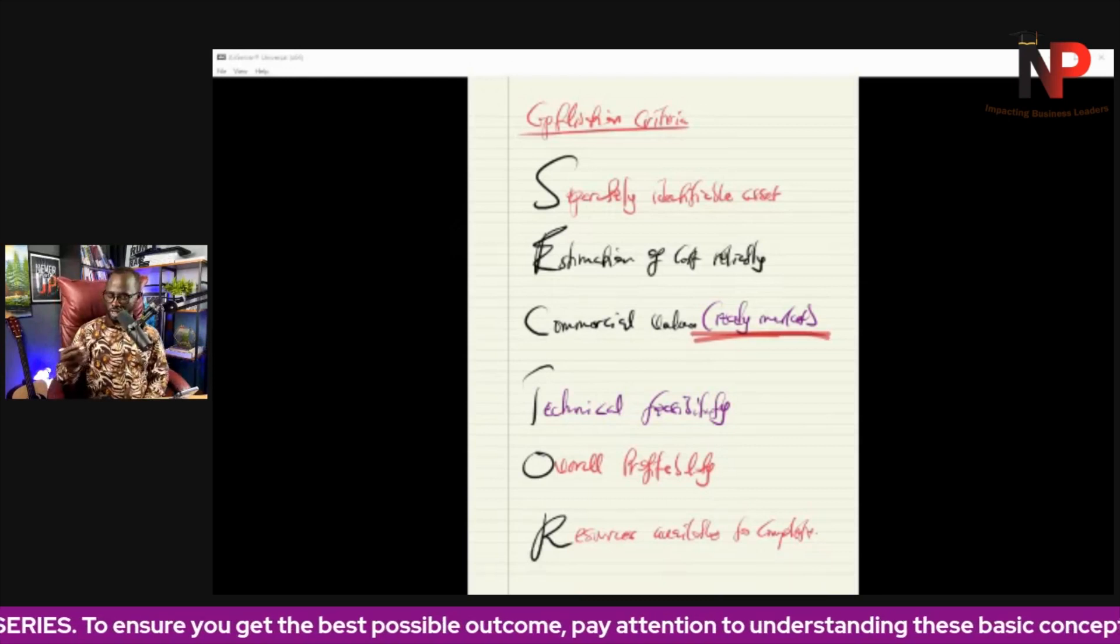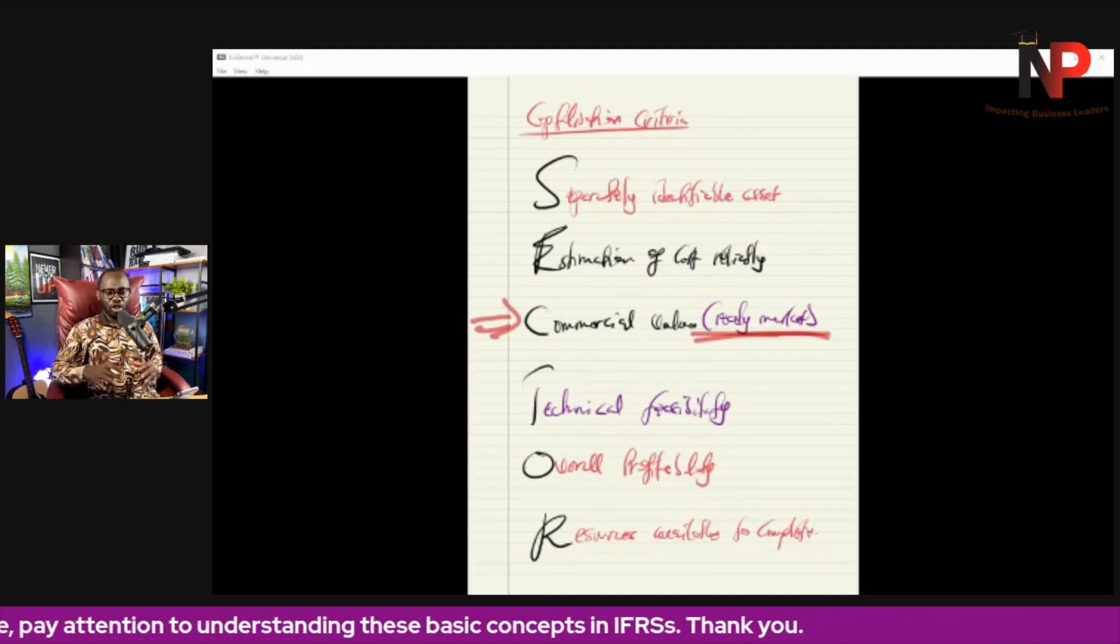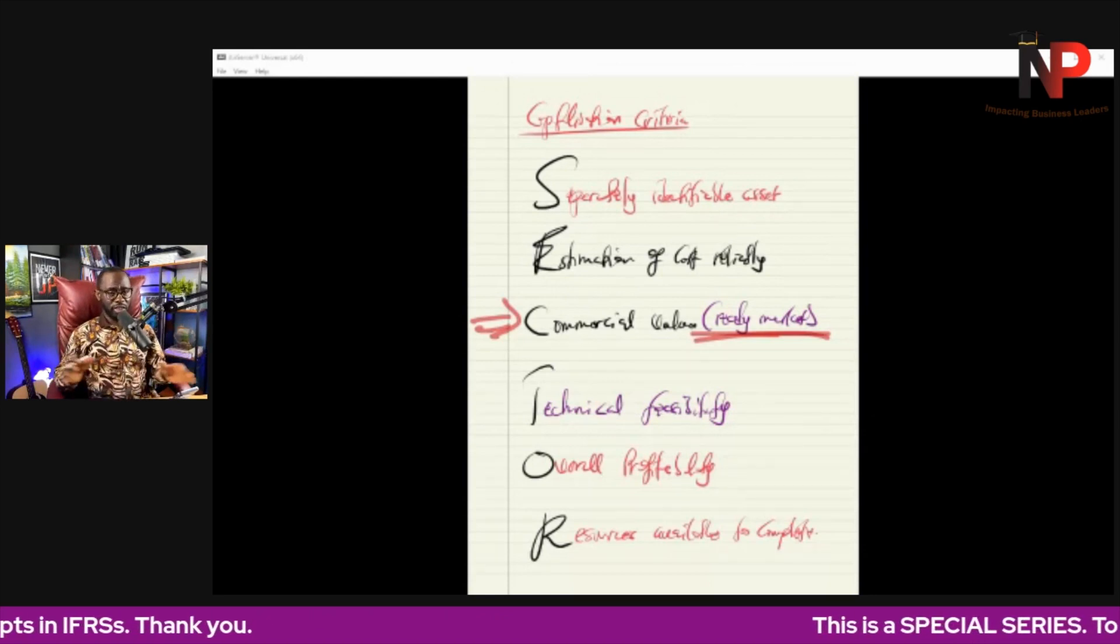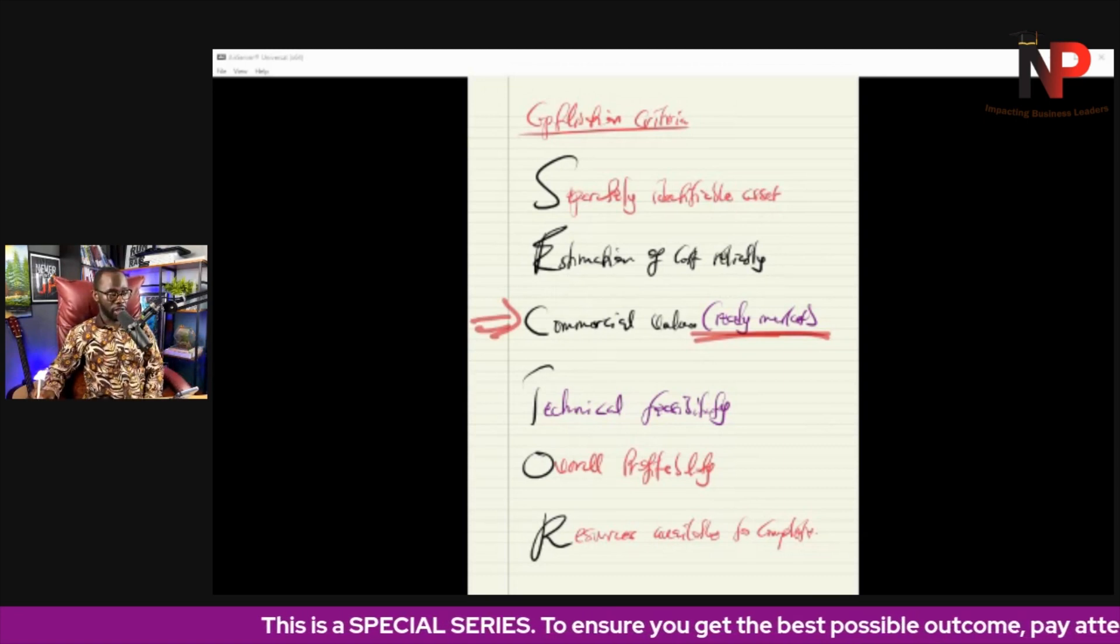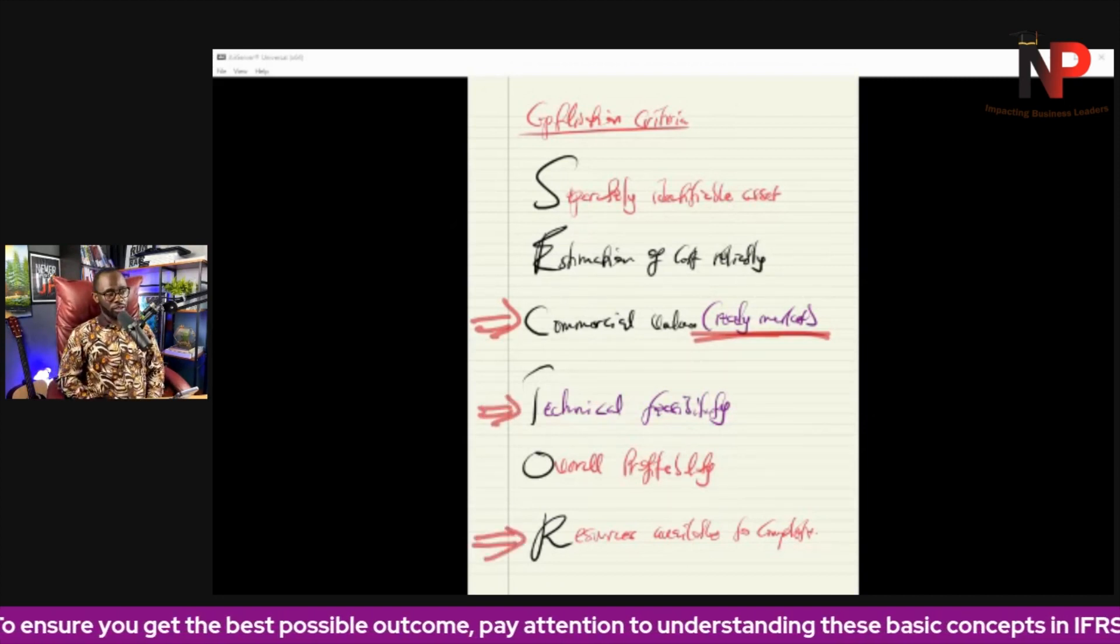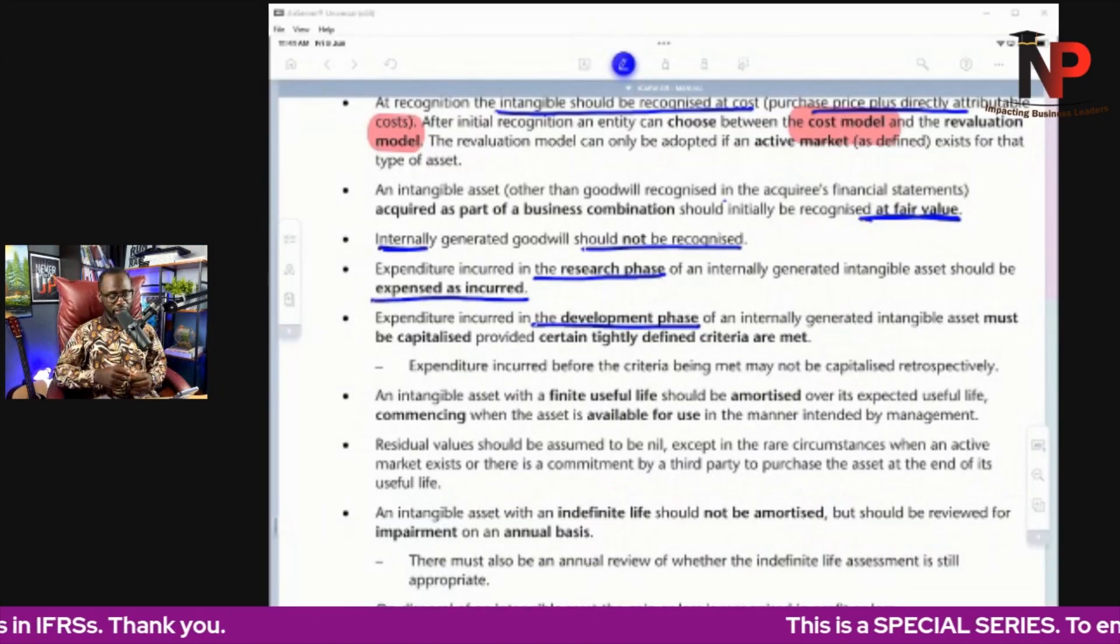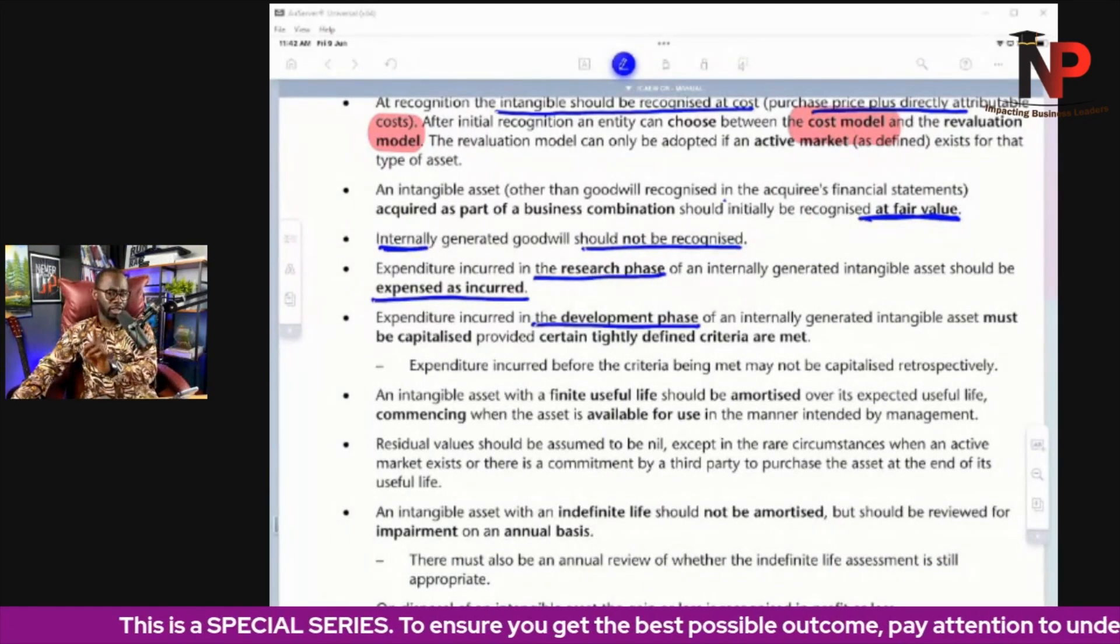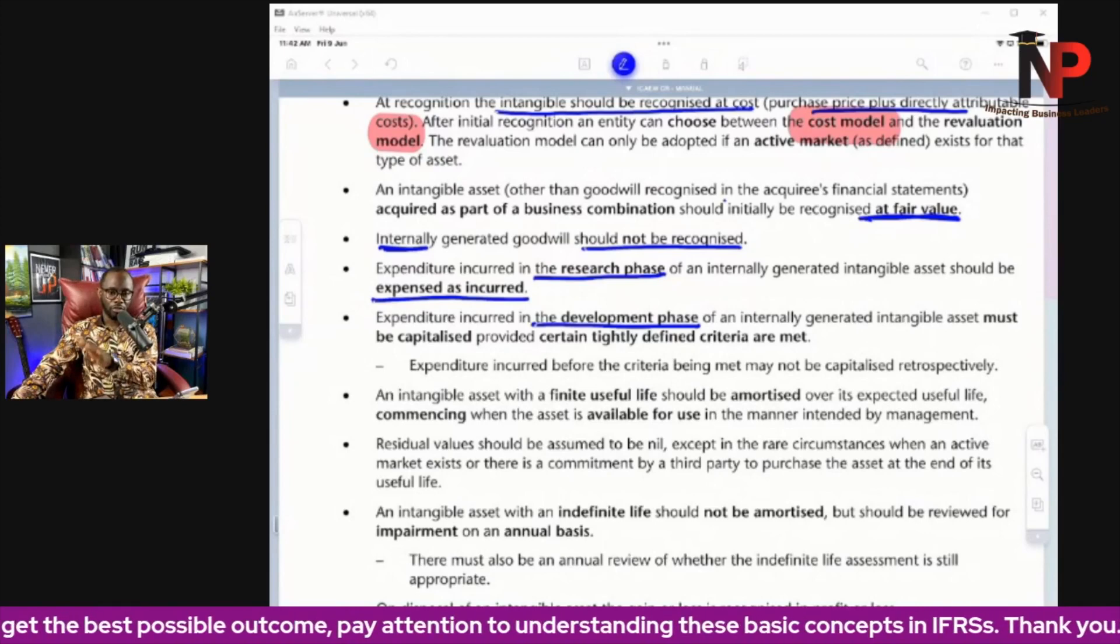So these are the things we need to understand. Now, usually in a given question, we are going to be looking at issues like commercial viability, because not all of it will be stated in the question. So sometimes the one that is very crucial that will be stated, that will be obvious in a given question, will be the issue about commercial viability and the issue about technical feasibility, and then sometimes resource availability. So you have to be on the lookout. If this criteria is not there, what is going to happen is that all development costs will be expensed in the P&L accounts. So not all development expenditures will be capitalized. They will only be capitalized upon the meeting of the recognition criteria.